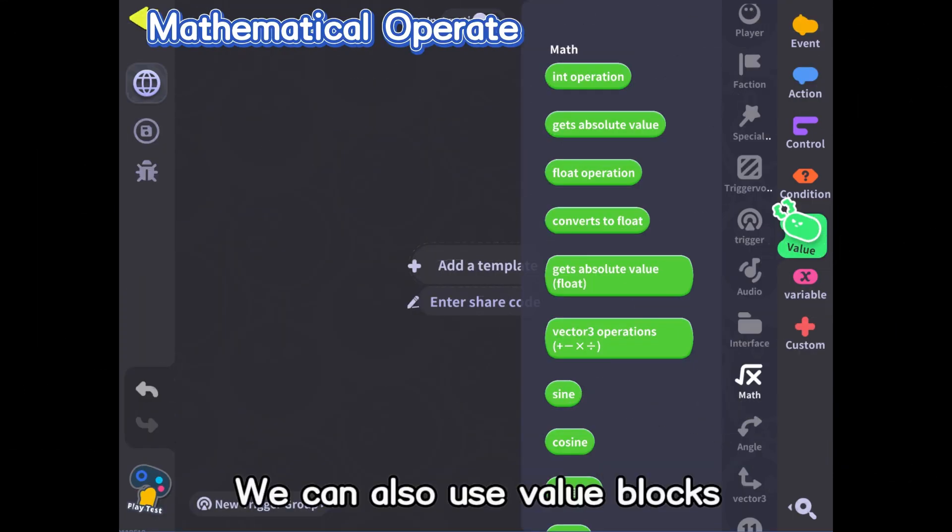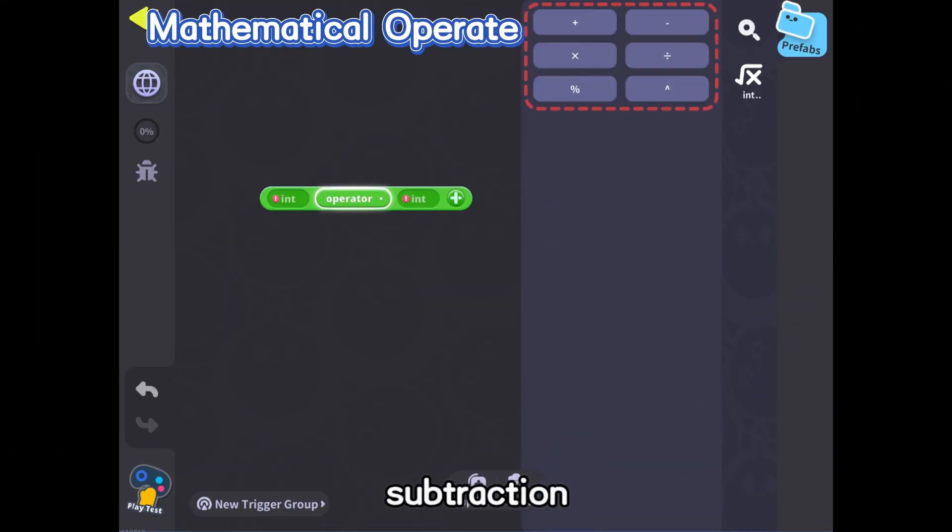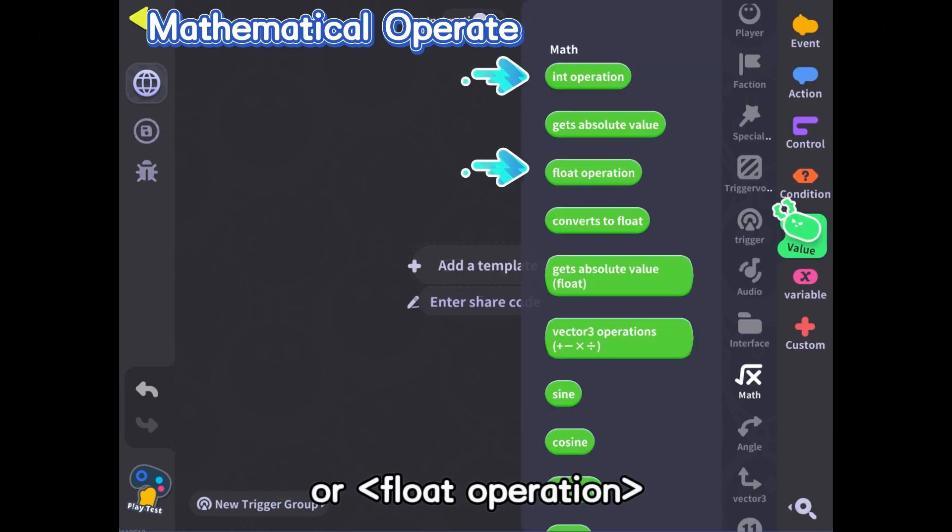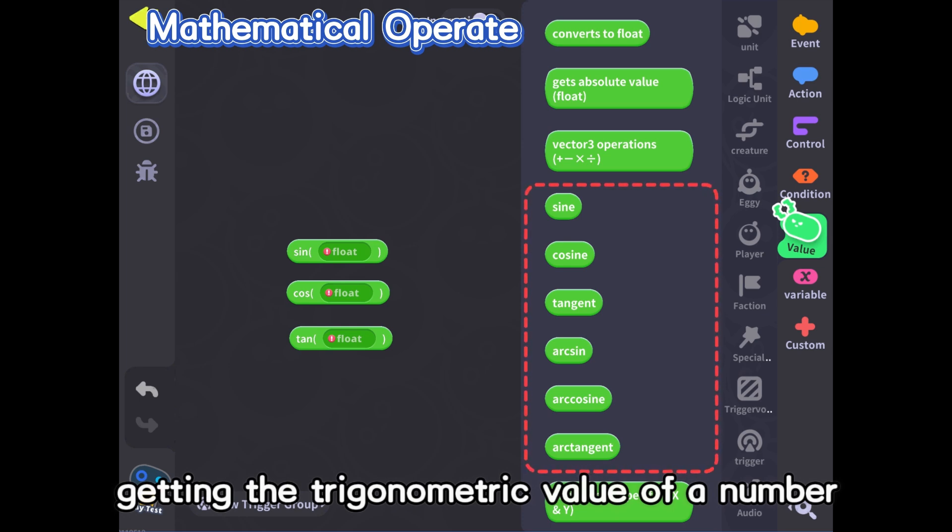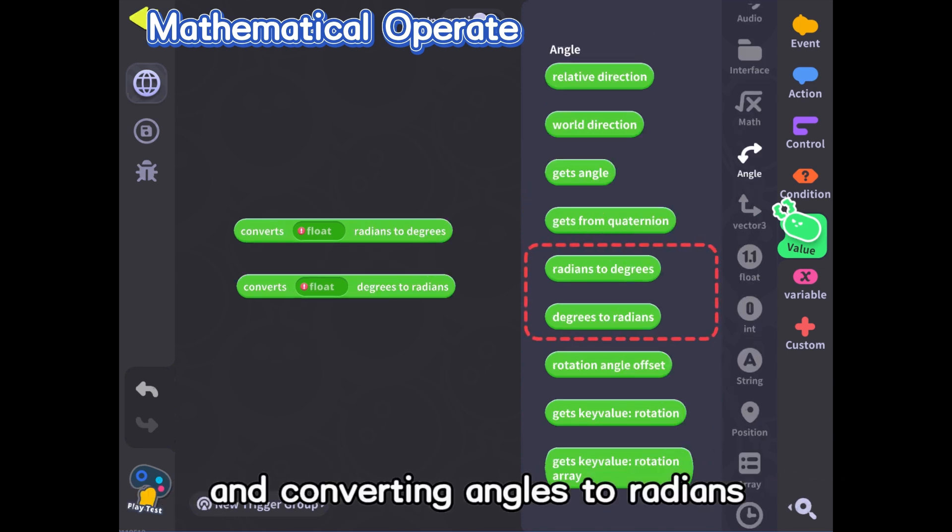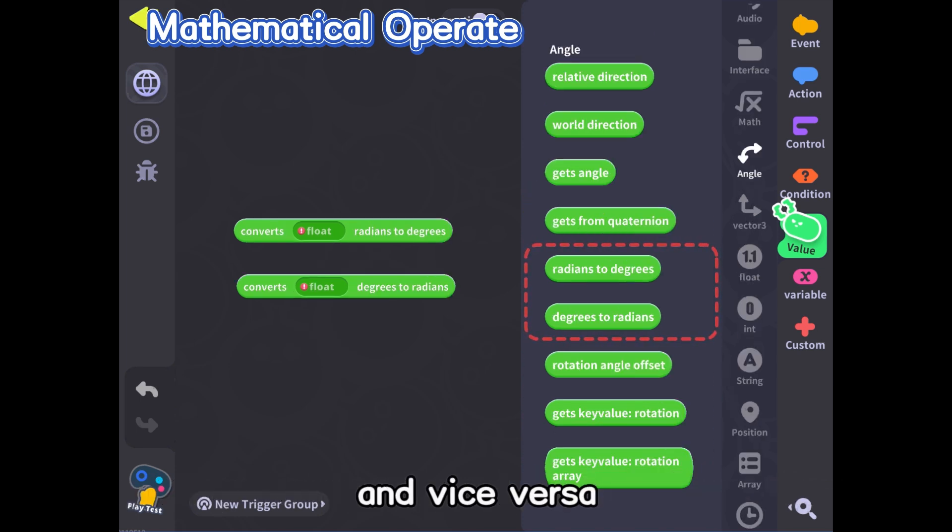We can also use value blocks for mathematical operations, like addition, subtraction, multiplication, and division with int operation or float operation, getting the trigonometric value of a number, and converting angles to radians and vice versa.